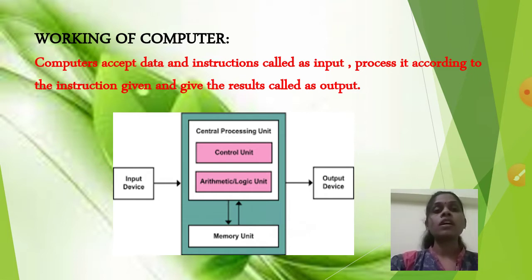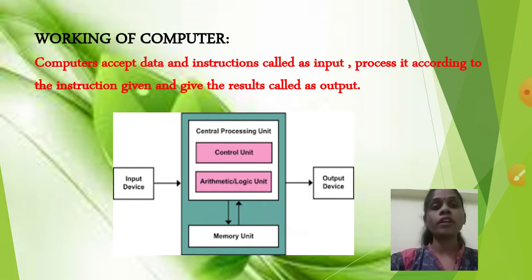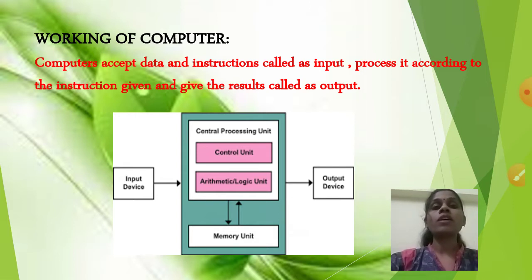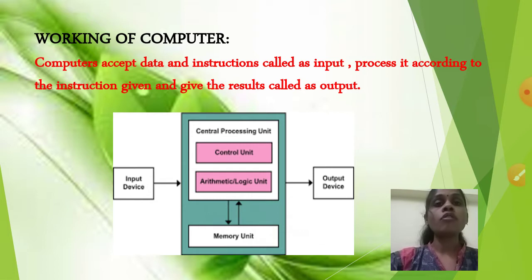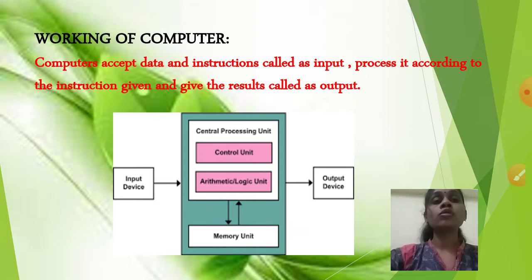Students, please note down this image — it is very important. Working of a computer: the computer accepts data and instructions called input, processes it according to the instructions given, and gives the results called output. The computer takes input from input devices and sends it to the CPU.